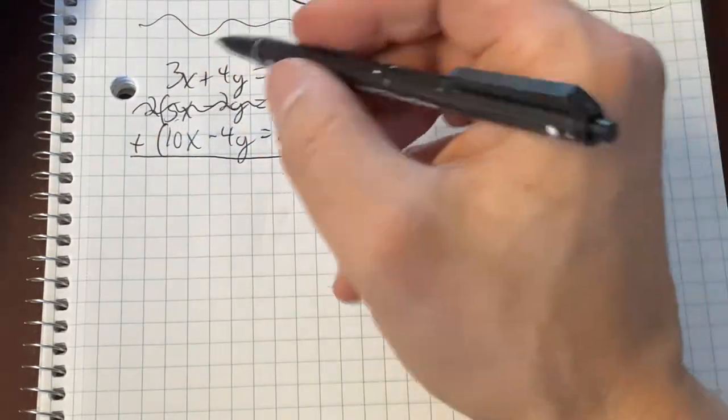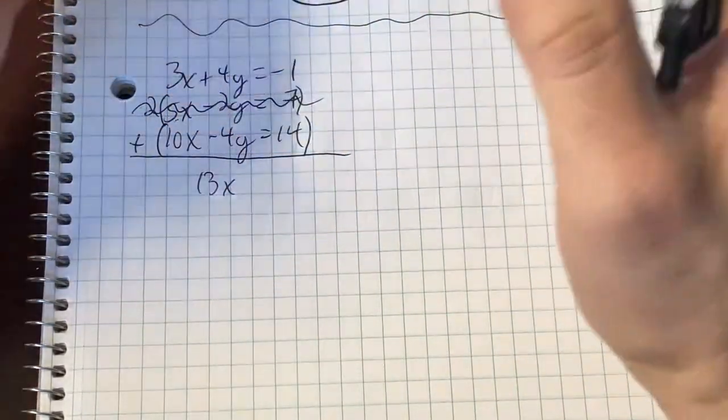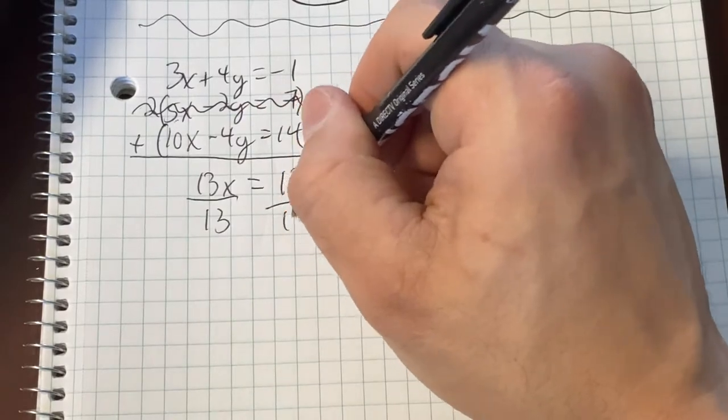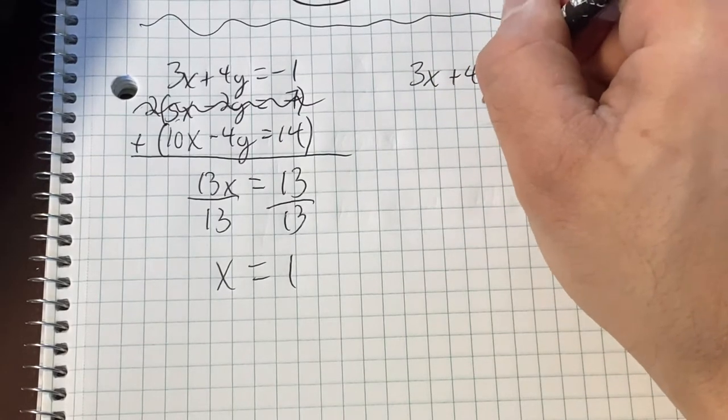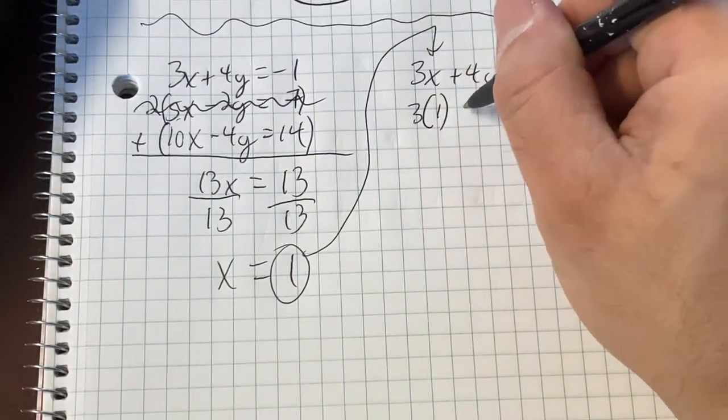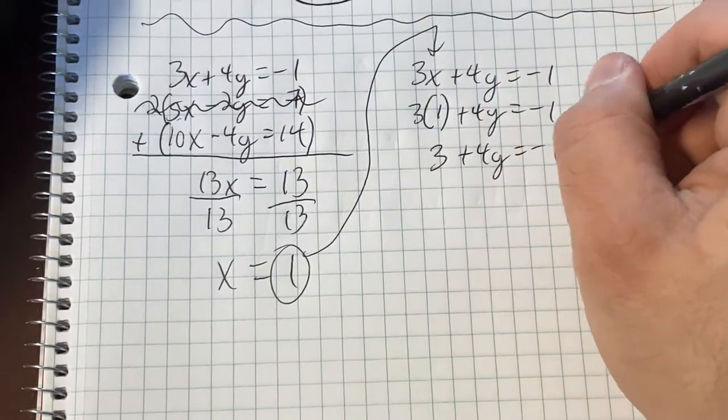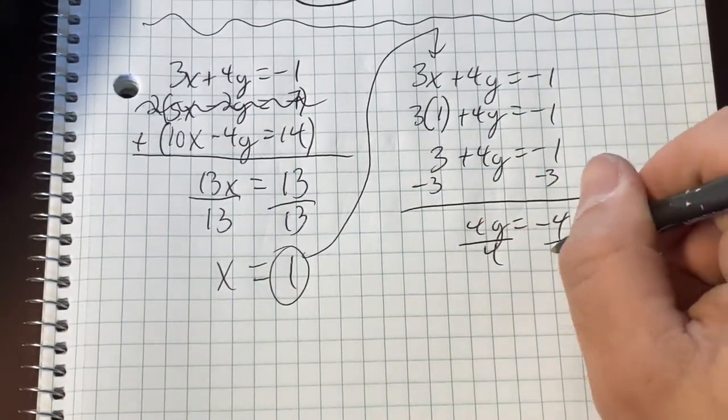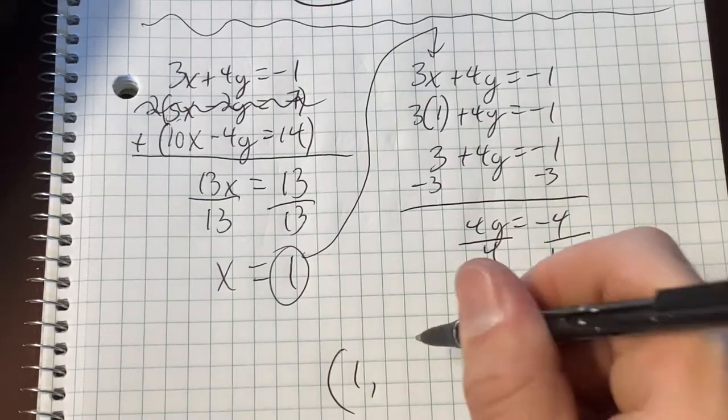Different signs we're going to add to eliminate. 3x plus 10x is 13x. 4 plus negative 4 is gone. Negative 1 plus 14 is 13. And look how pretty this is. X equals 1. Choose one of these guys up here. I'll just take the 3x plus 4y equaling negative 1. I will take my 1 and put it in for x. 3 times 1 plus 4y equals negative 1. 3 plus 4y equals negative 1. Subtract the 3. 4y equals negative 4. Divide by the 4. And y equals negative 1. Final answer here. 1 comma negative 1.